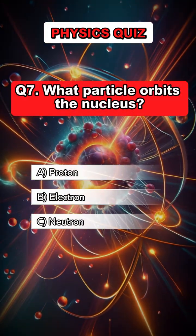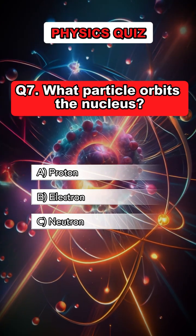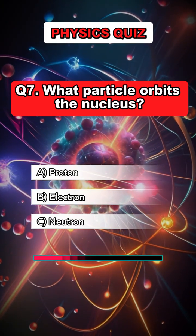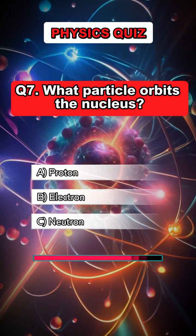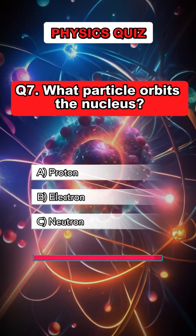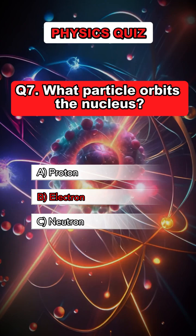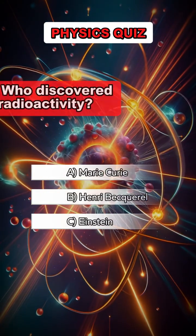Question 7. What particle orbits the nucleus? Answer. B. Electron.